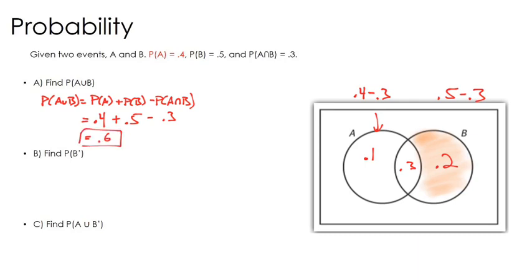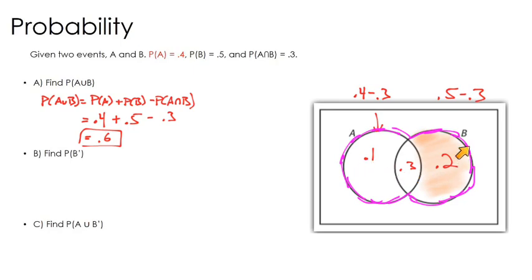Another way to think about this — and this is why the visual is so helpful — the probability of A or B is represented anywhere in the Venn diagram circles. Another way to answer this without as much of the formula is: 0.1 plus 0.3 plus 0.2 — this whole part of the diagram represents A or B. So if you add those together, you get 0.6 as well.